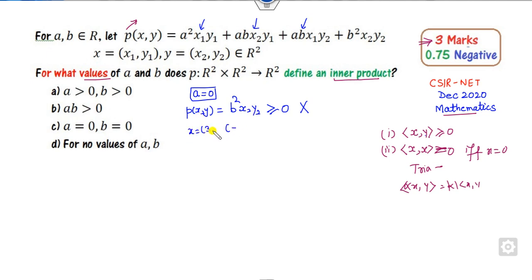Why? Because you can take x as (3, 4) and y as (-1, 7). So x₂ and y₂ are 4 and 7. If you substitute these values, it will be minus 7 times b² times 4 times 7. Since b² is always positive, it can never be greater than zero, so this option is cancelled out.